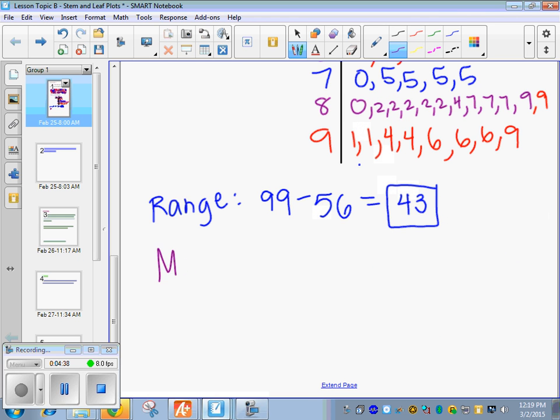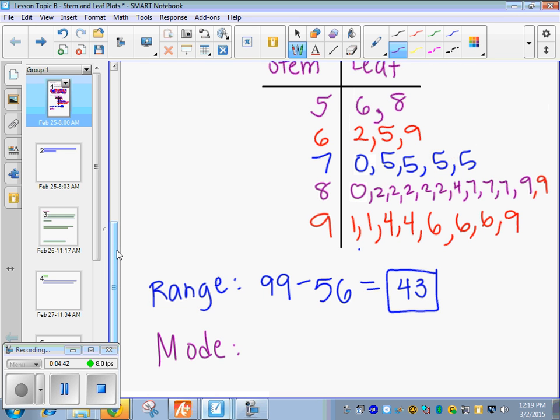Okay. So, there's our range. How about our mode? Anybody know what the mode is of the data now that we're in this order? Most frequent, which would be what? 82. Yeah. 82 had five of them. That was the most of any other number.